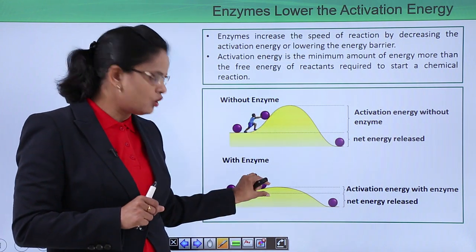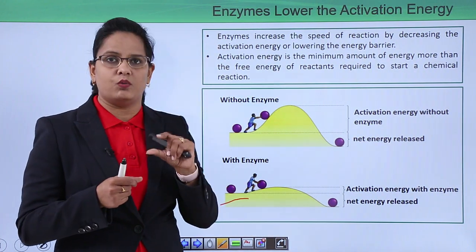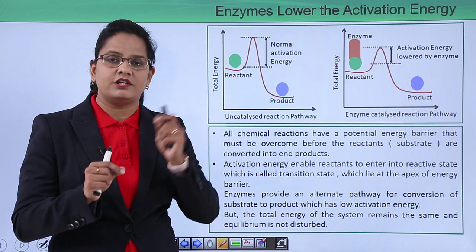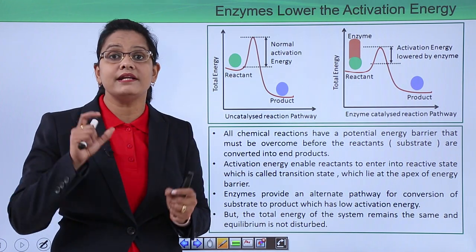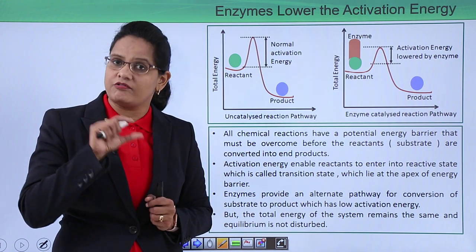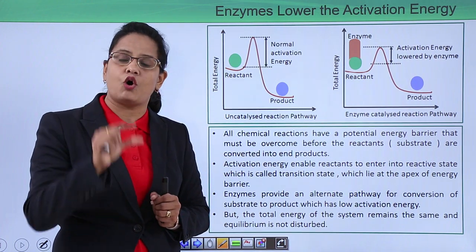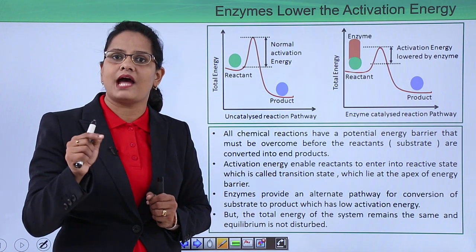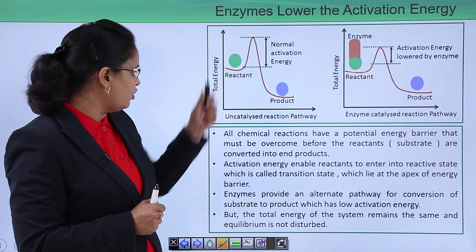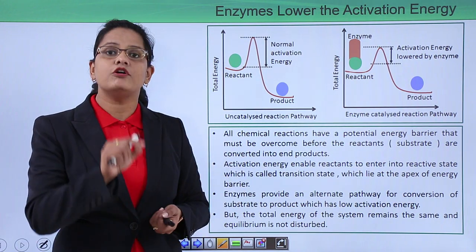If the barrier is low, the ball can cross the mountain easily. Every reaction in which reactants are converted into products has a certain energy barrier that must be crossed. There is a minimum amount of energy required to start a reaction. When the energy barrier is low, the reaction can happen very easily — more collisions among reactants will happen and more products will be formed.